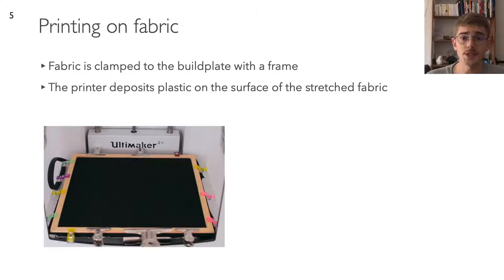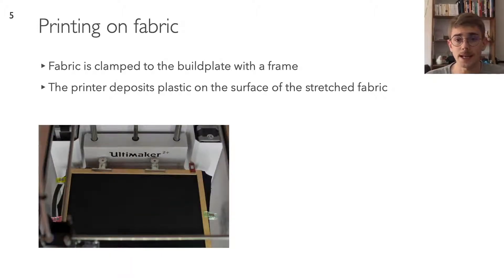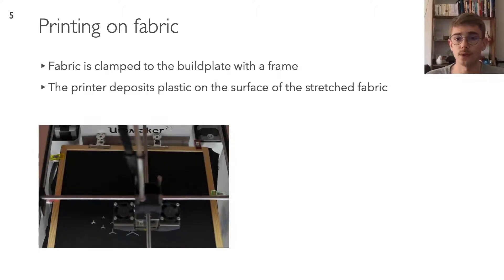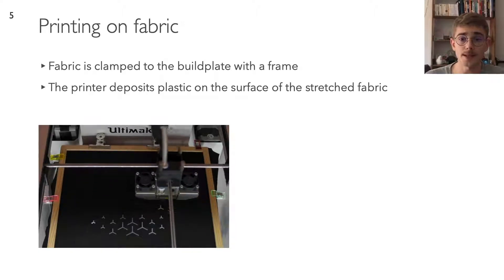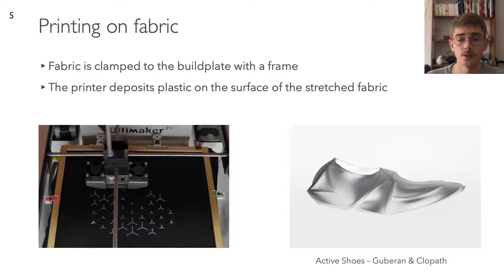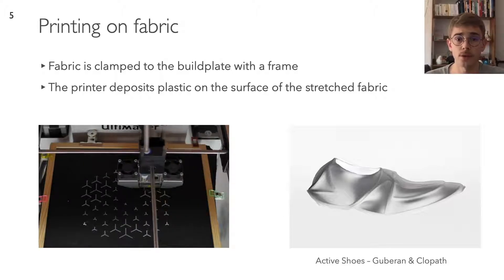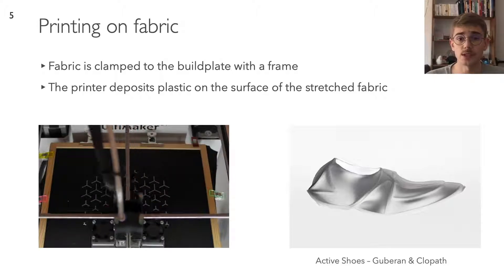A particularly simple way to create self-shaping textiles is a process we call printing on fabric. The idea is to clamp a piece of fabric onto the build plate of a 3D printer, using a frame to maintain uniform pressure so that it doesn't move, and let the printer deposit plastic curves onto the fabric. The molten plastic naturally binds with the fabric, so no additional process is required. This technique was introduced by designers Christophe Guberon and Karlo Klopath, who used it to create a self-shaping shoe.